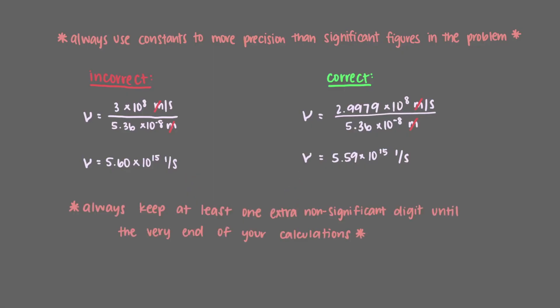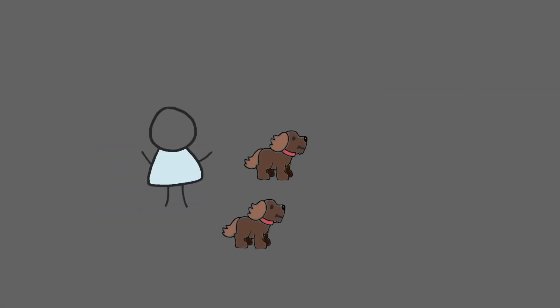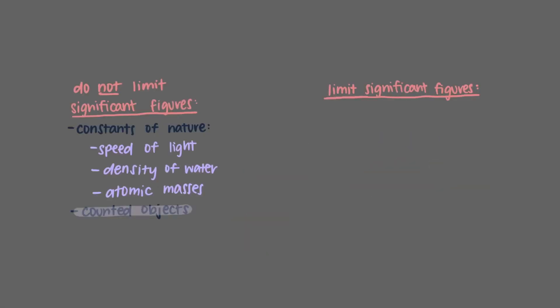Always keep at least one extra non-significant figure until the very end of your calculations. Constants of nature — like the speed of light, the density of water, and the atomic masses of elements — are not measured quantities and so will not limit our significant figures. Always use these values to more precision than you need. Similarly, counted objects have no significant figures either. For example, if you are walking your two dogs, it is impossible to have 1.7 dogs, so this quantity is an exact number and is fully precise. Only measured quantities obey the rules of significant figures; constants, conversion factors, and exact numbers are not measured.